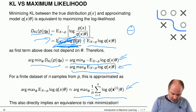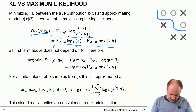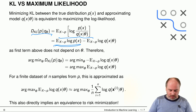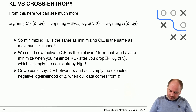So the constant shift is exactly this negative entropy term which was crossed out — it's the term that we can drop because it doesn't depend on our parameter.